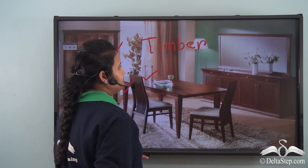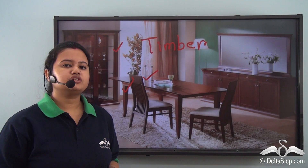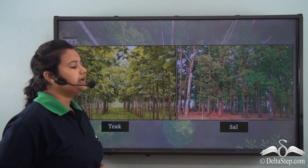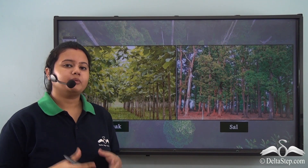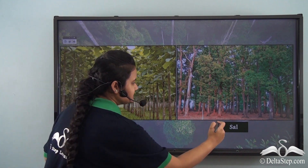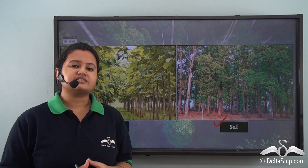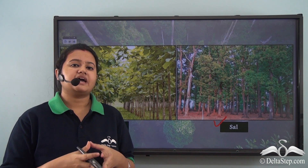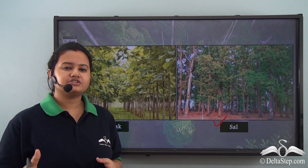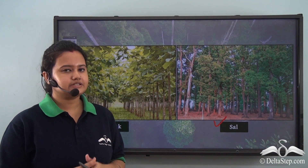Timber is an important plant product. Can you name some trees from which timber is obtained? Timber is obtained from hardwood trees like teak, sal, sesham, etc. Now these trees are hard, compact and therefore very durable. So for this reason these hardwood trees are usually preferred to obtain timber.